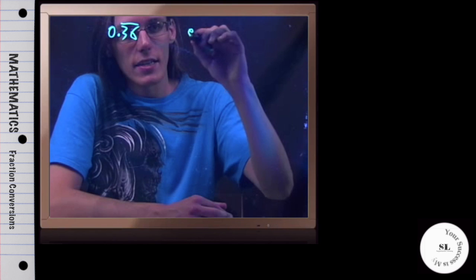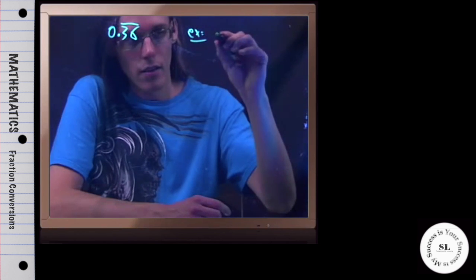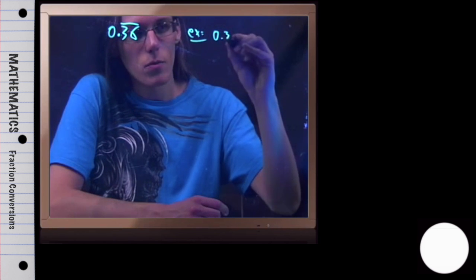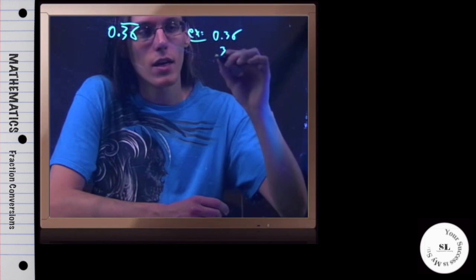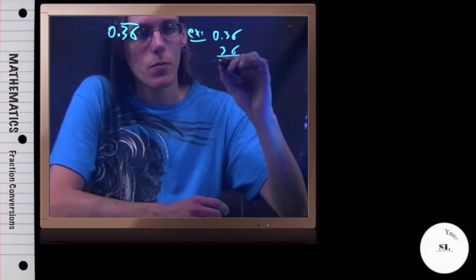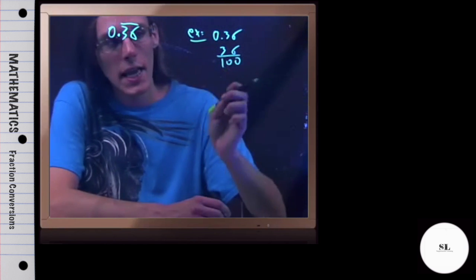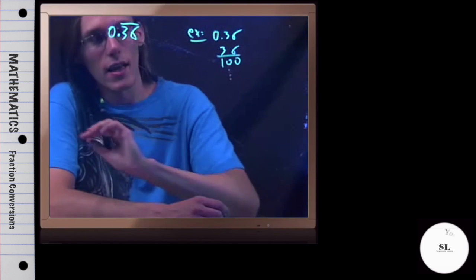Just as an example to compare, if this was not 0.36 repeating, but just 0.36, then I would say this is 3, 6, and I had two decimal places, so over 100, and I would reduce this fraction, and that would be that.